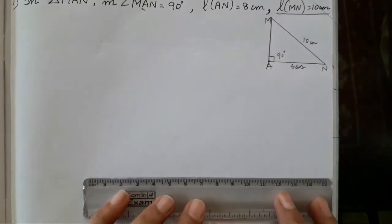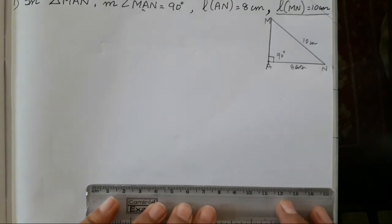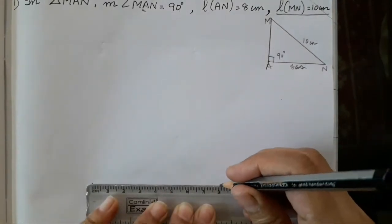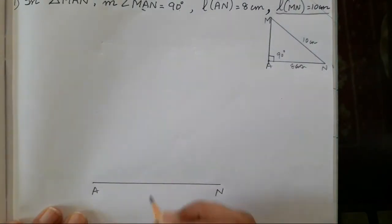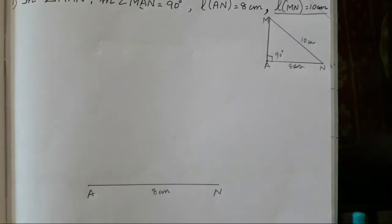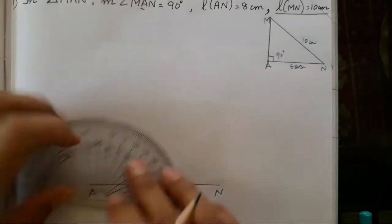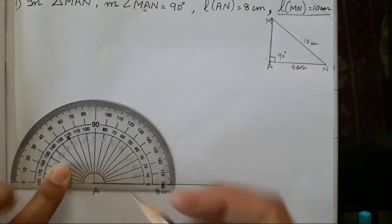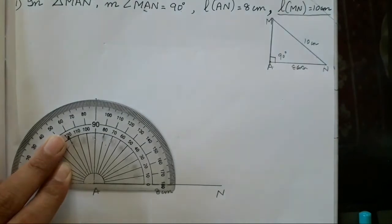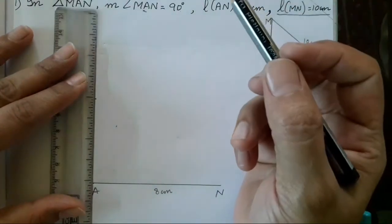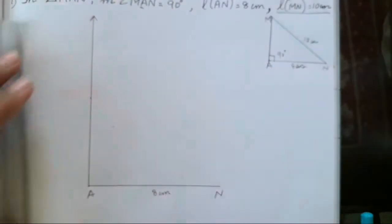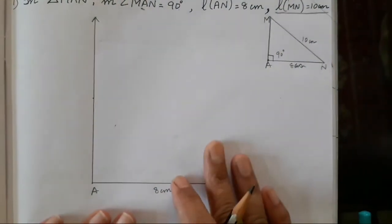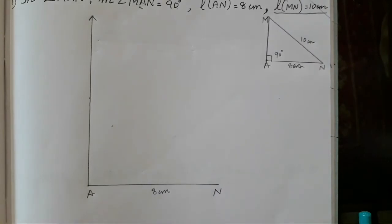Now let's take 8 cm on the base — AN is 8 cm. You have to take A as 90 degrees, so it's a straight angle. The other exercises we have already completed. Check the description box; the links will be provided there if you haven't watched those videos before. Try to understand the other exercises before starting this one.